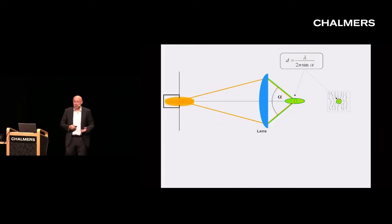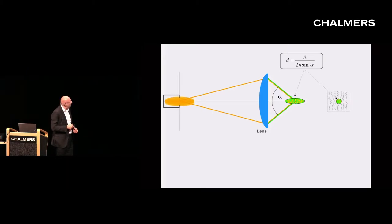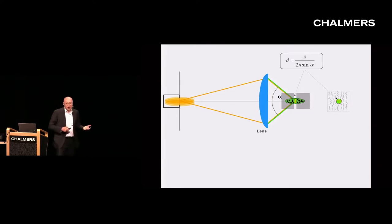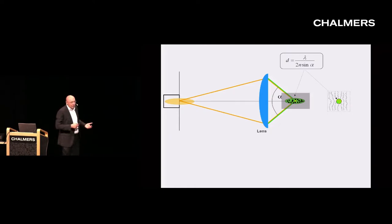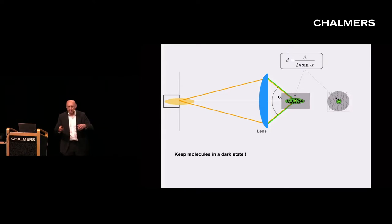Let's get back to the problem. All the features are flooded at the same time with light and hence they're all producing signal — we cannot change that, it's a result of diffraction. But does it really mean that all features flooded with light have to produce light at the detector? What if we manage to put some molecules into a state in which they are not able to produce light — a dark state? Then we should be able to separate the bright ones from the dark ones. The key is not to change the way the light is focused, but to play with the state of the material, in this case the molecule.